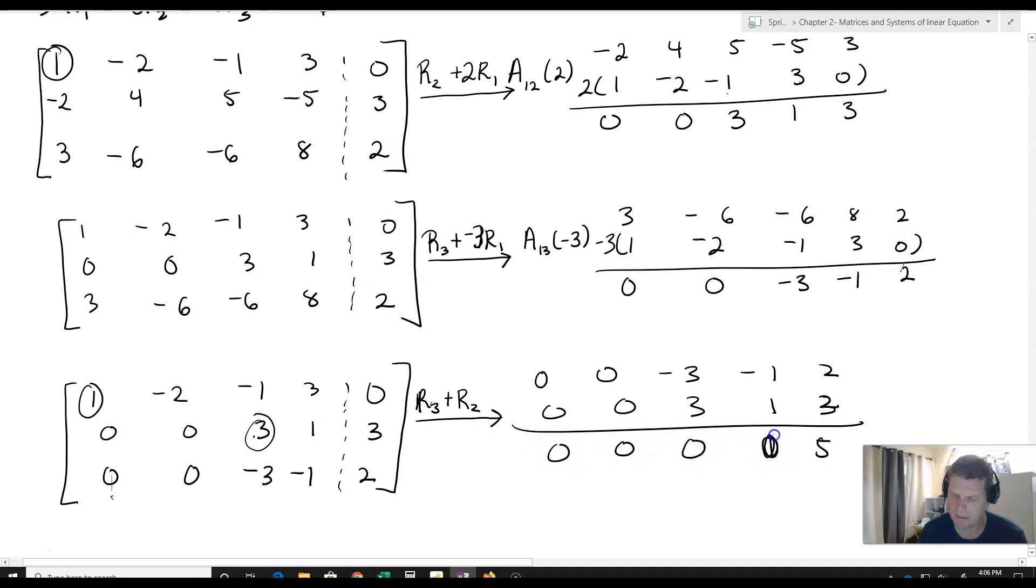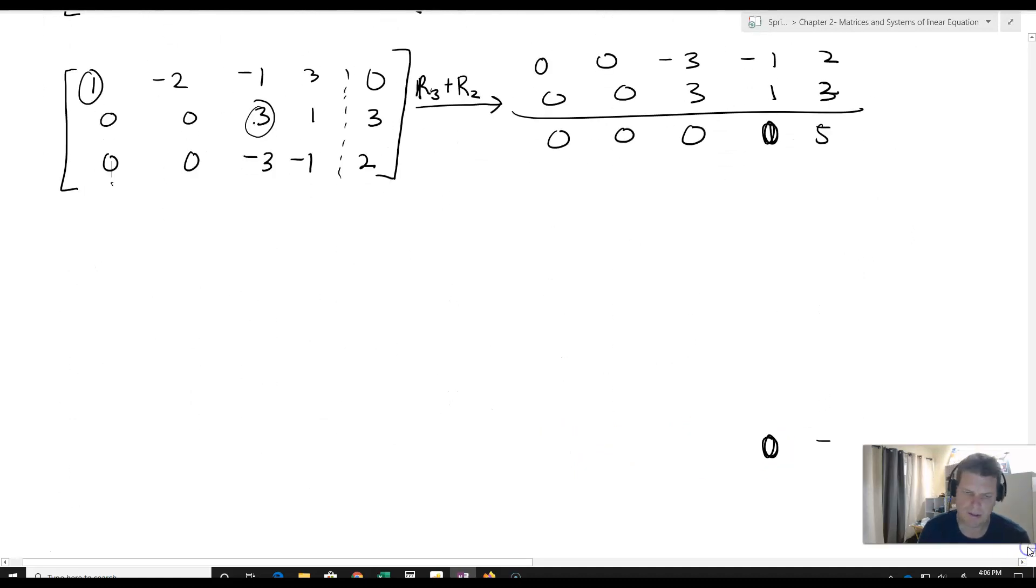So now my new matrix is [1, -2, -1, 3, 0; 0, 0, 3, 1, 3; 0, 0, 0, 0, 5].